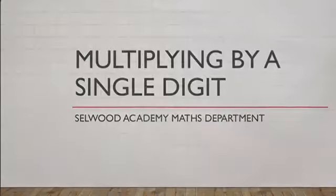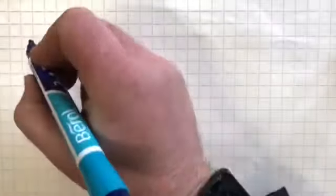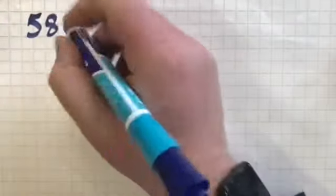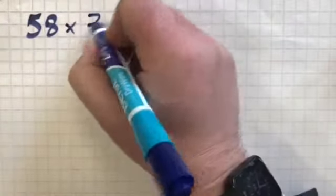Welcome to this video on multiplying by a single digit. To start off with, we're going to look at a calculation: 58 multiplied by 7.